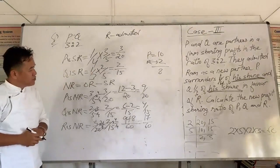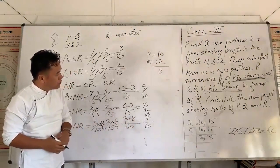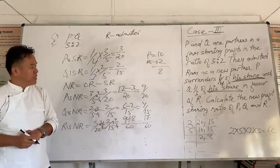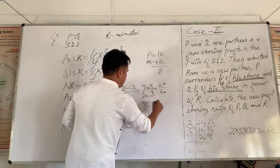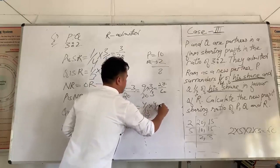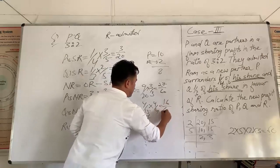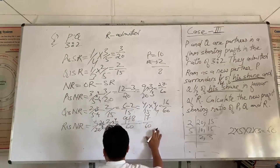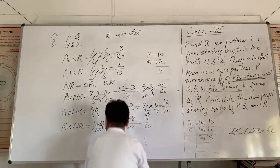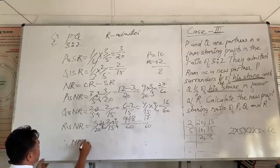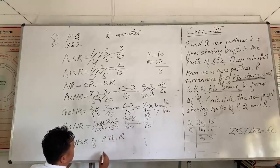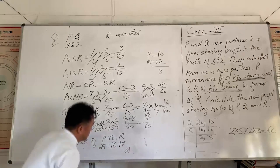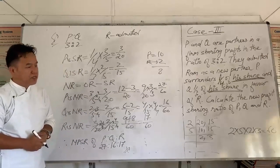Since we are calculating the new profit sharing ratio, we have to convert all fractions into ratio by making denominators the same. So 9 by 20 becomes 27 by 60, and 4 by 30 becomes 8 by 60, and R's ratio is 17 by 60. Therefore the new profit sharing ratio of P, Q and R is 27 is to 8 is to 17. This is how we calculate new profit sharing ratio for case number 3.